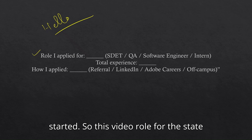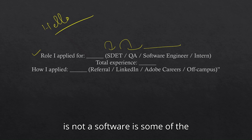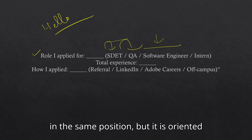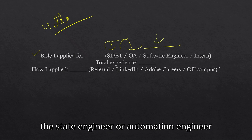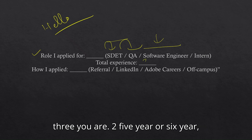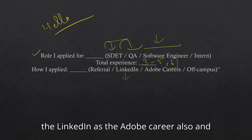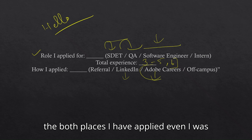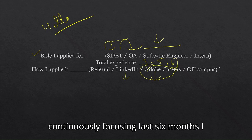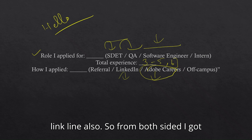This video is for the SDET or Software Engineer profile. Some organizations hire SDET or QA under the same position — oriented as SDET engineer or automation engineer. The experience range is two to six years. I applied through LinkedIn and the Adobe careers portal, and for the last six months I was continuously focusing on attending this organization's interview.